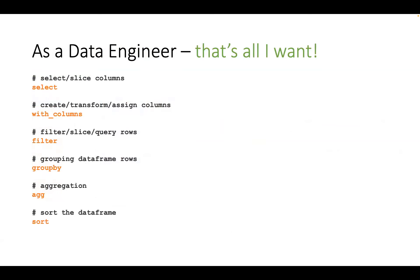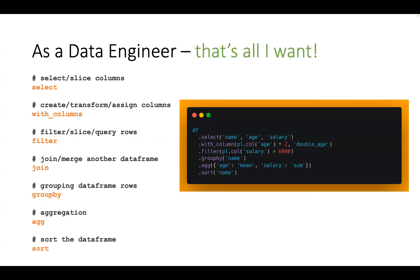Before we jump into the demo, I want to show how a data engineer works with this kind of data. All they need is a few verbs: selecting columns, creating columns, filtering, and doing group-by or join operations. In code this looks like: select a few columns, create a new column, apply the filter, apply group-by, apply aggregation, and sorting if needed. The syntax is very clean and readable — if you're coming from a Spark background, this will seem very familiar. Each of these expressions gets executed in parallel.